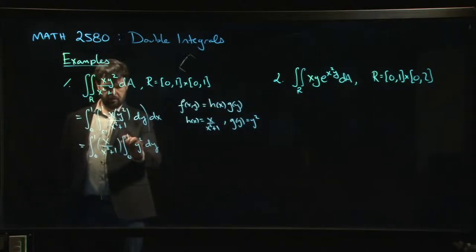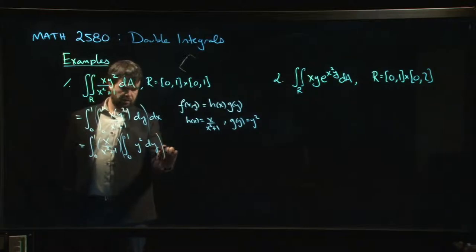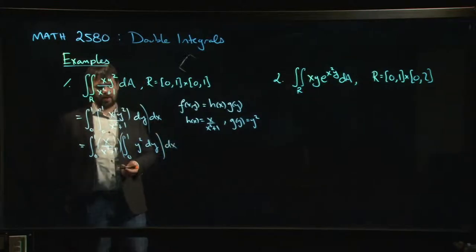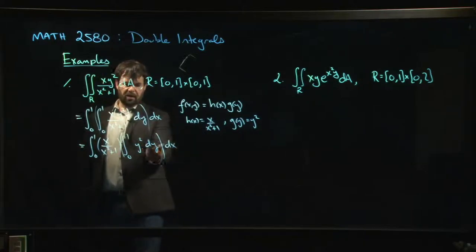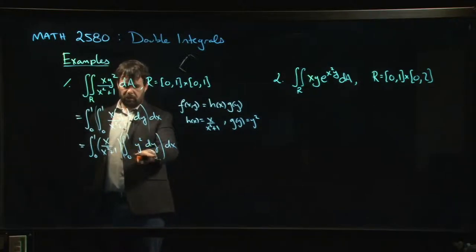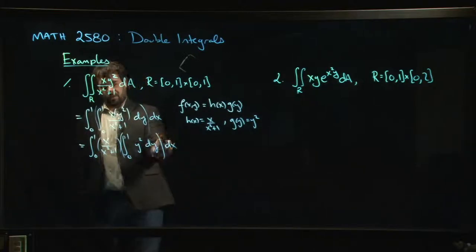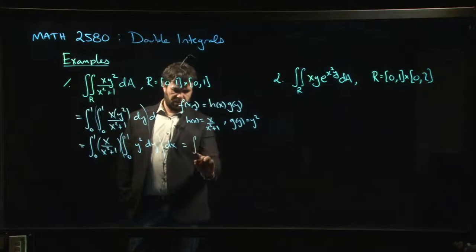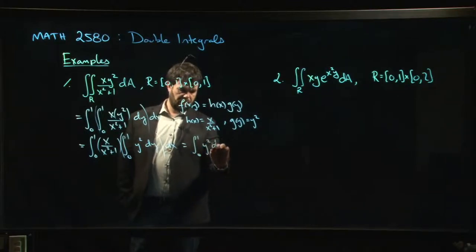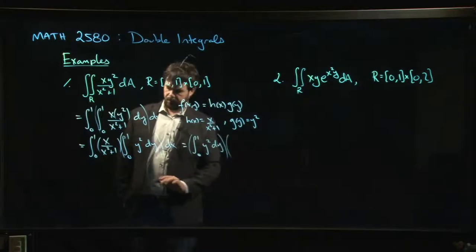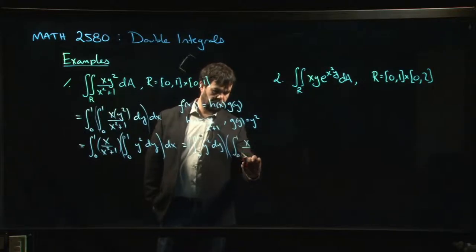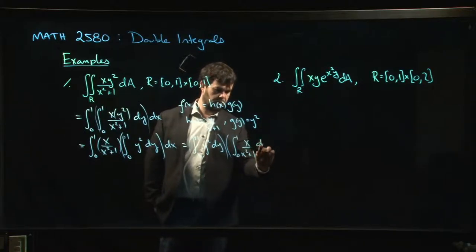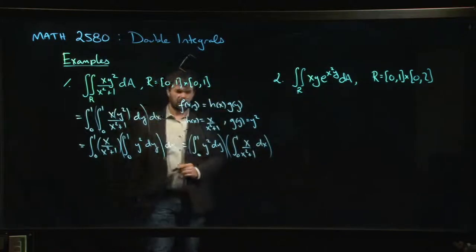And then we still have our integral with respect to x. The integral of y squared with respect to y is a number — it's a constant — so it can come out of the integral with respect to x. So we can write the integral from 0 to 1 of y squared dy out front as a constant, and what's left is the integral from 0 to 1 of x over x squared plus 1 dx. Now you just have a pair of integrals that you need to evaluate.